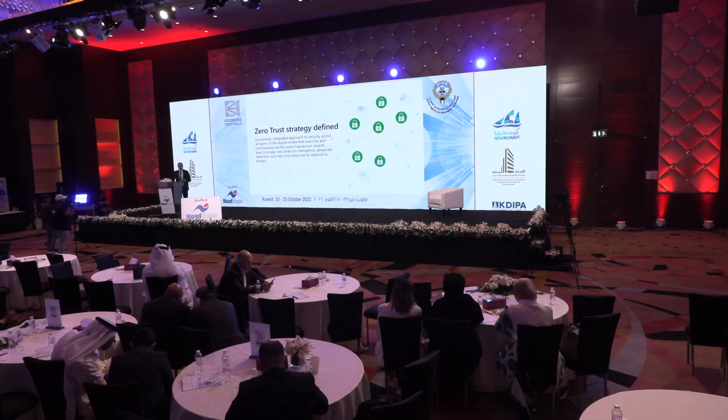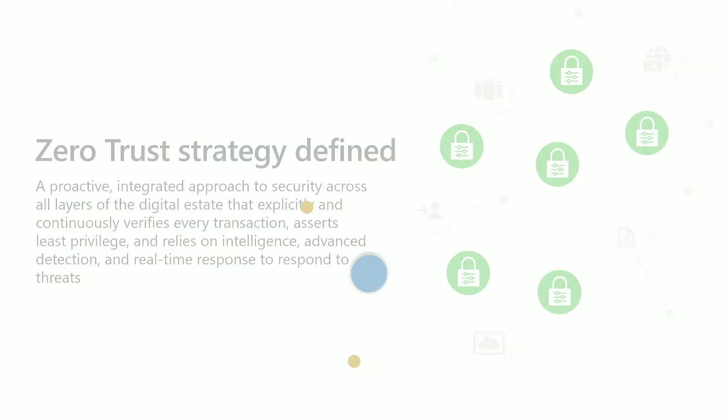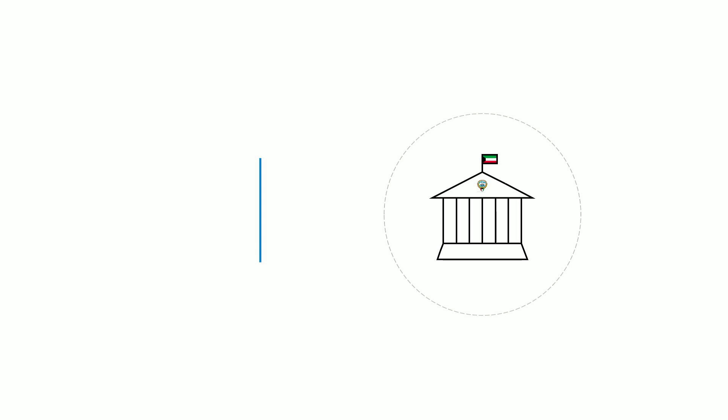We define Zero Trust as: every single request needs to be verified, secured, and authenticated. This is how we're doing it in partnership with the Central Agency for IT in Kuwait. Microsoft is helping government entities achieve a Zero Trust framework. We do it in a phased approach — what we call envision, plan, and deliver. We assess where an entity is in terms of their security maturity, then plan how they can achieve their Zero Trust framework, and then go in and do the deployment.